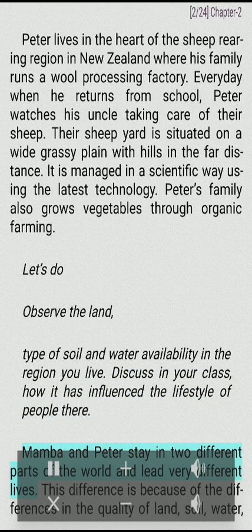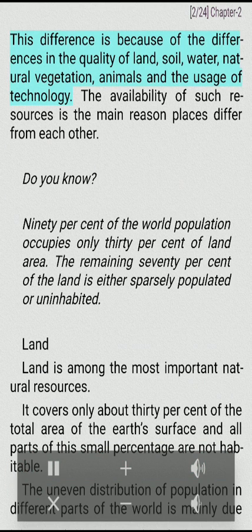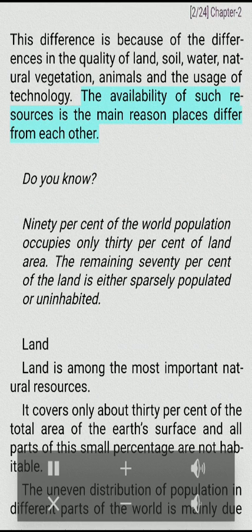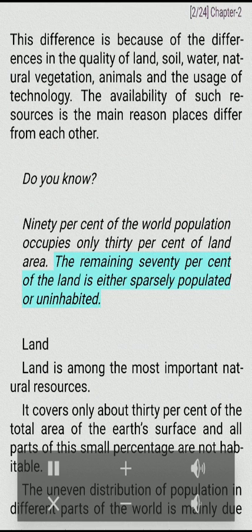Mamba and Peter stay in two different parts of the world and lead very different lives. This difference is because of the differences in the quality of land, soil, water, natural vegetation, animals and the usage of technology. The availability of such resources is the main reason places differ from each other. Did you know? 90% of the world population occupies only 30% of land area. The remaining 70% of the land is either sparsely populated or uninhabited.